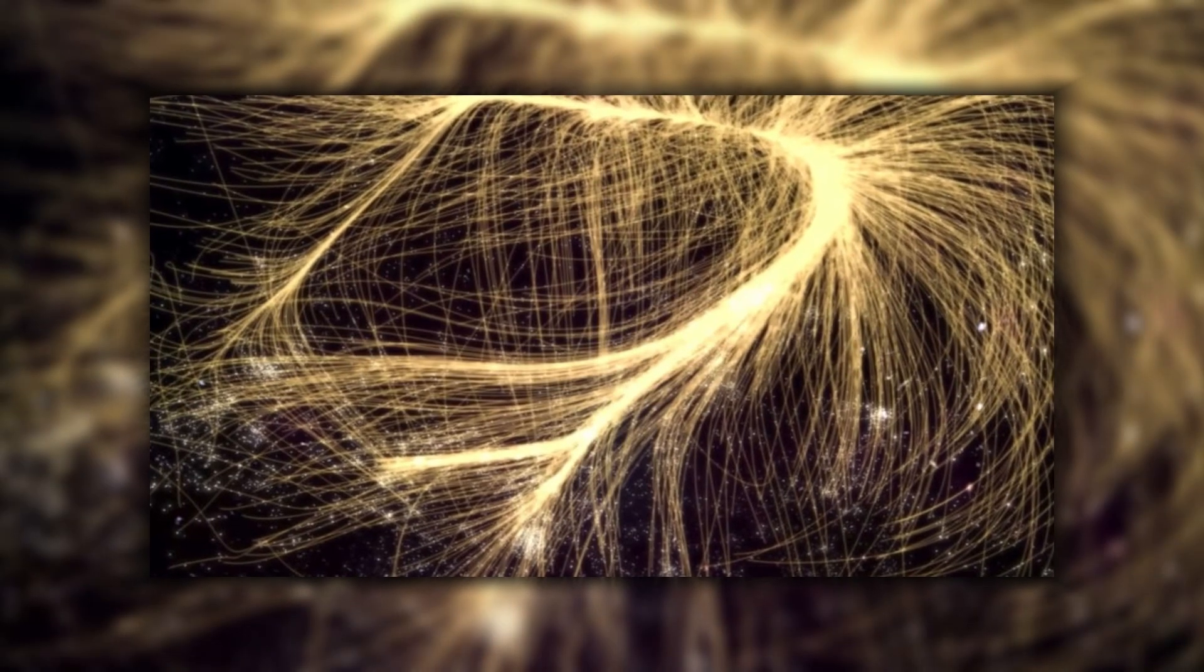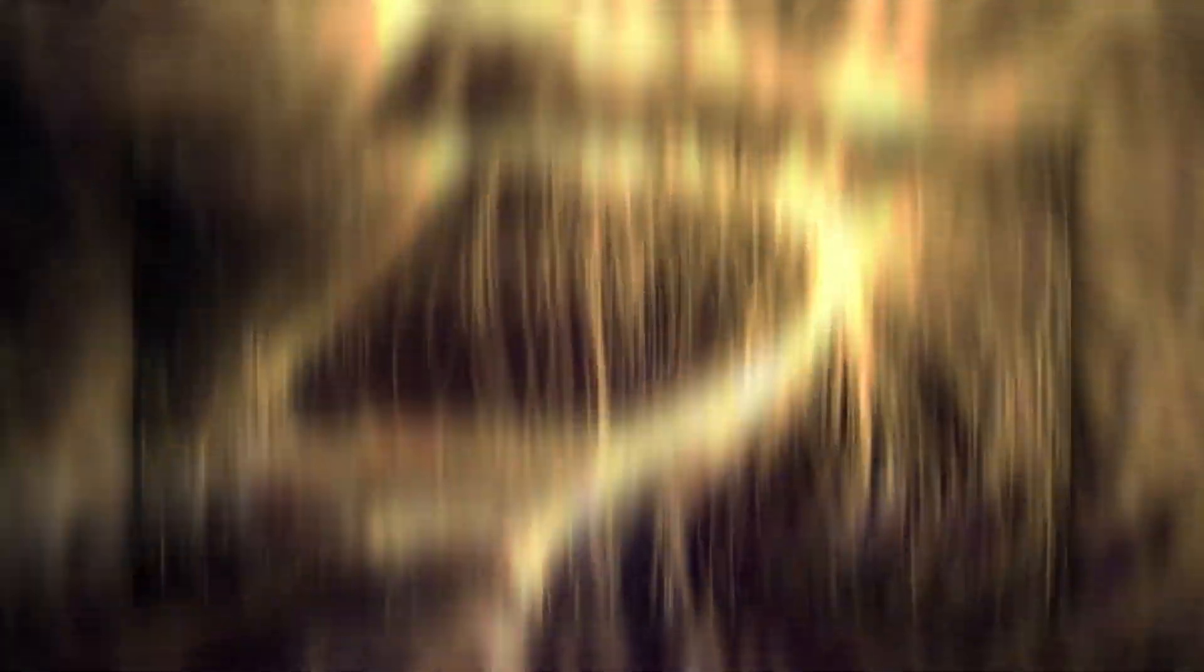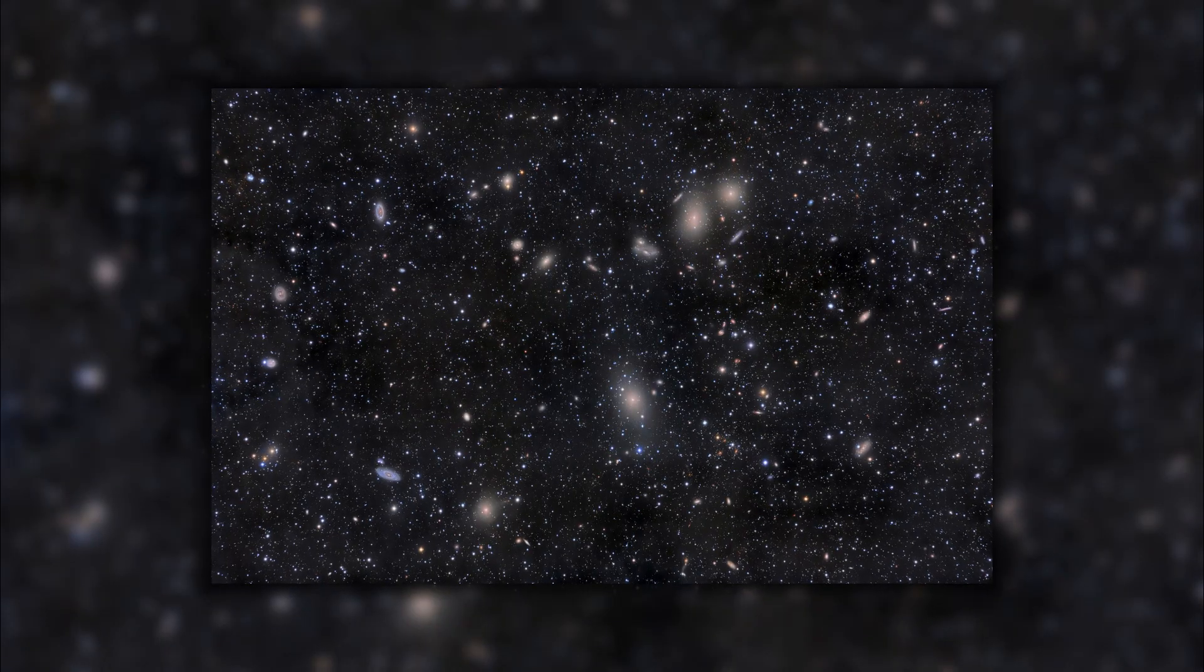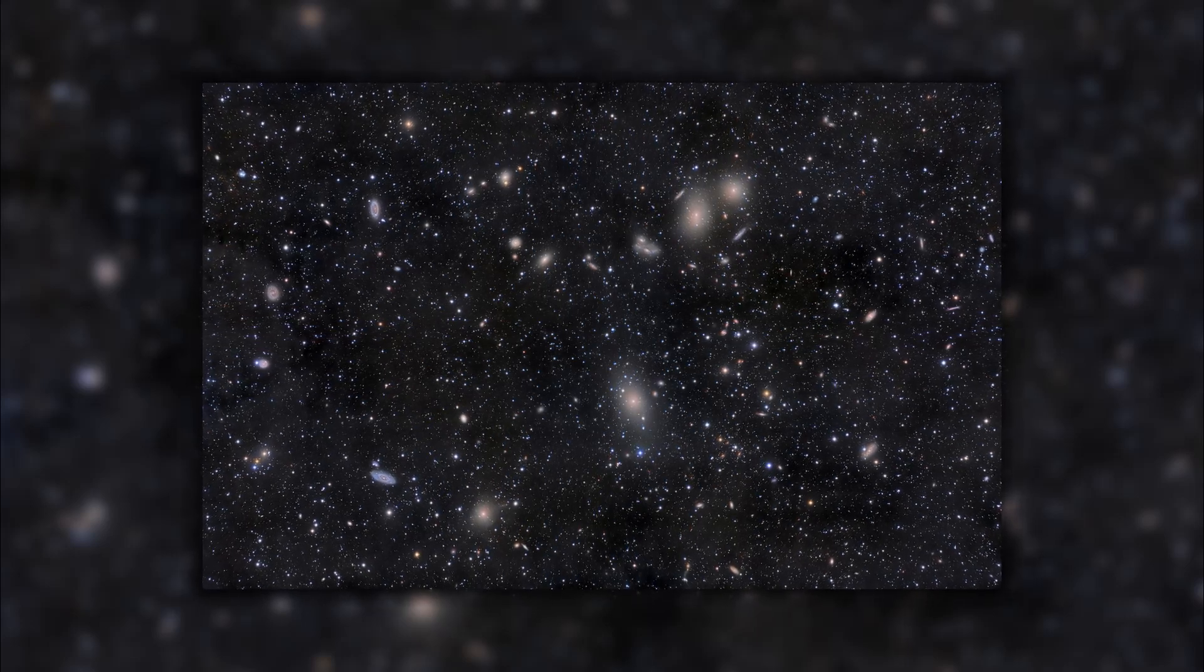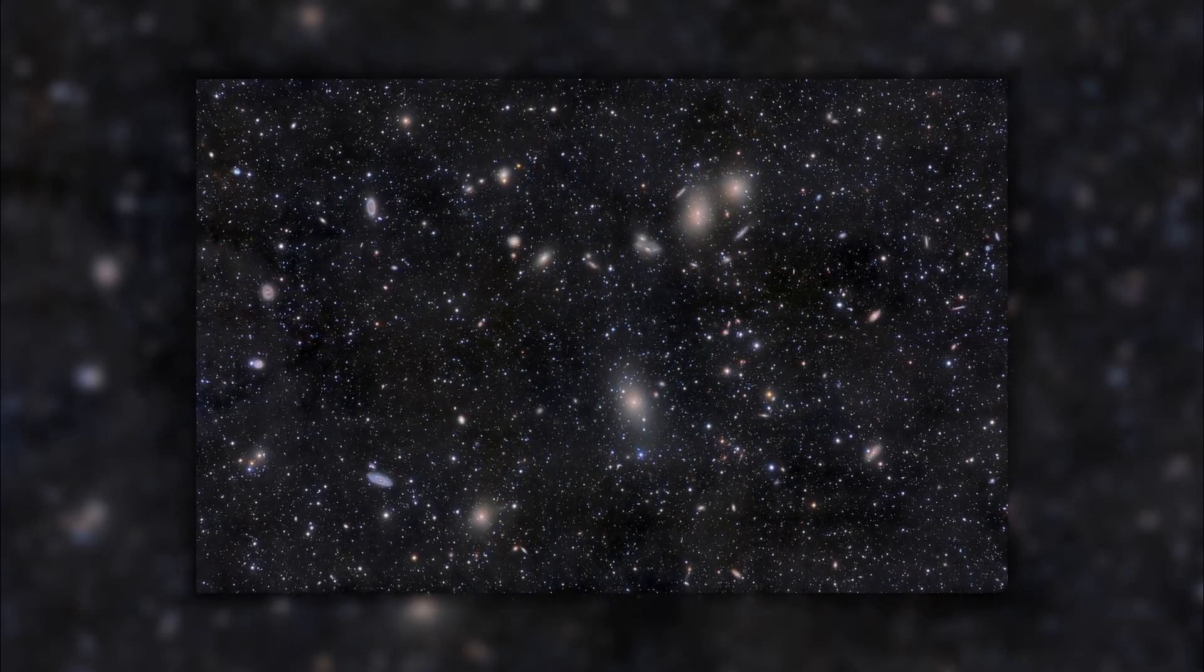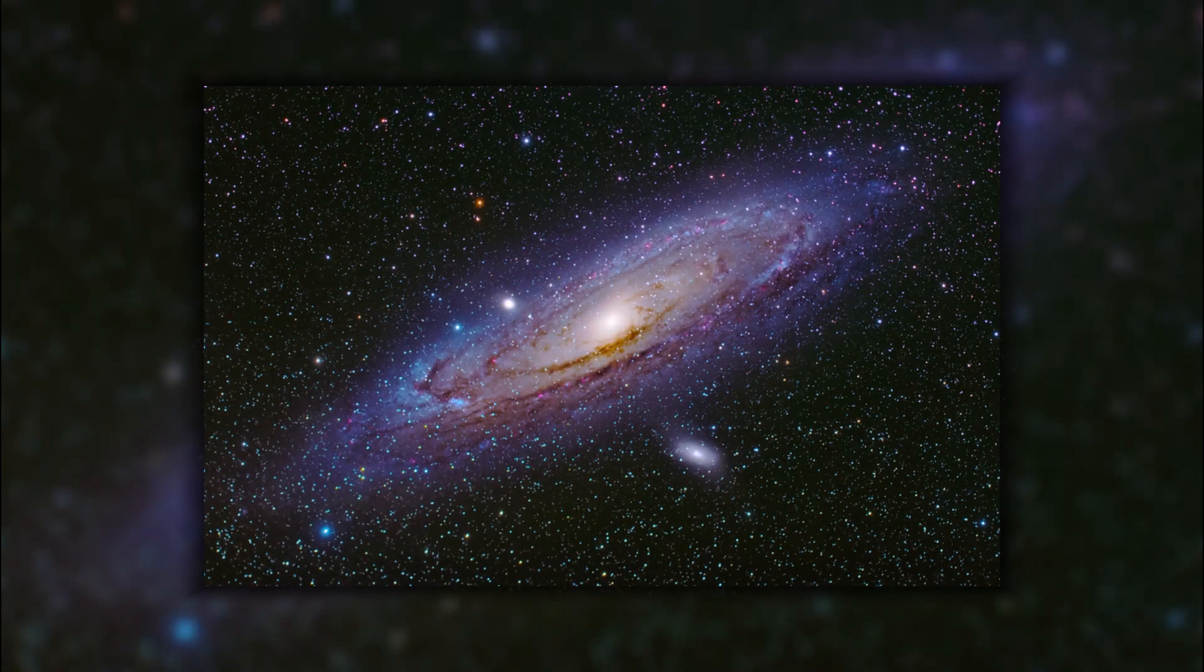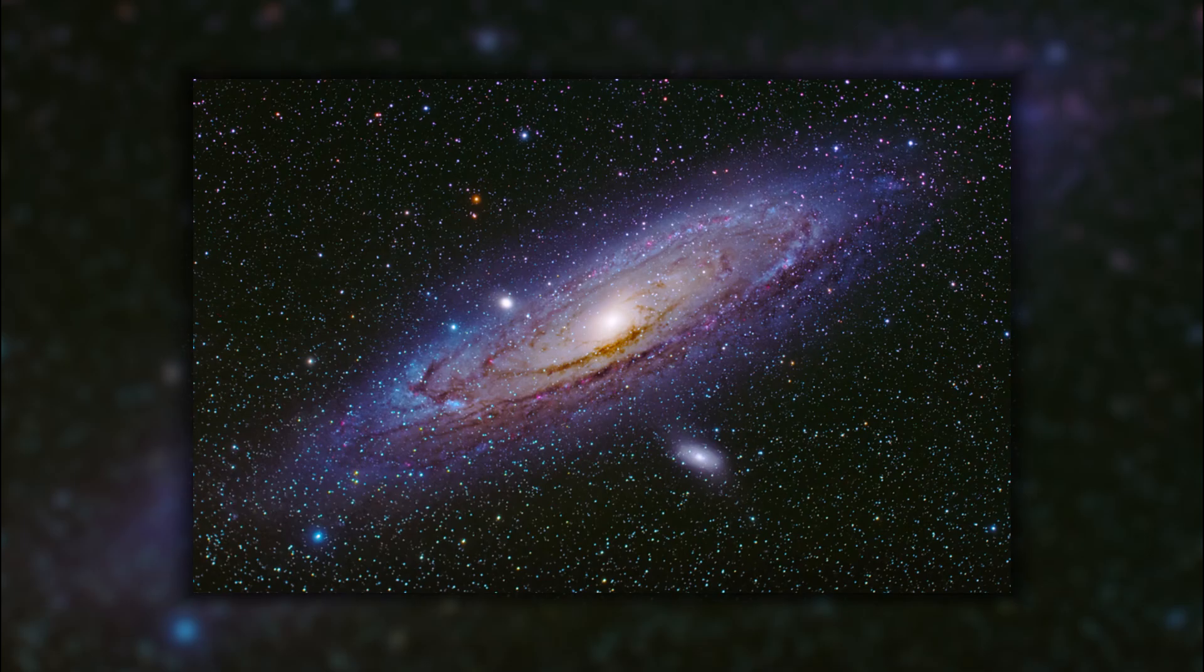The Great Attractor was first discovered in the 1970s by astronomers studying the motion of galaxies in the local supercluster, a group of galaxies that includes our own Milky Way galaxy. They noticed that many galaxies in the local supercluster were moving towards a common point, even though gravity should be causing them to spread apart.